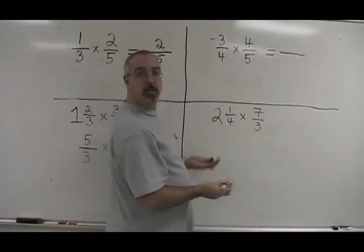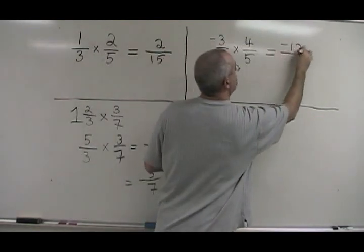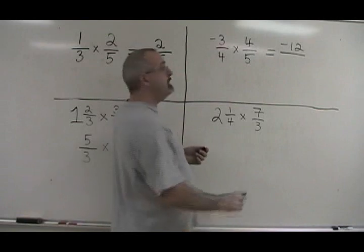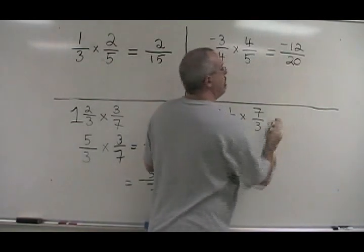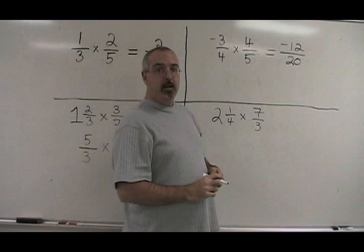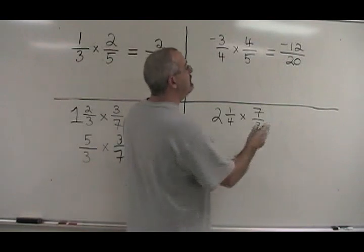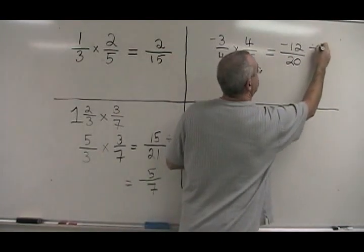Negative 3 times 4 is negative 12. 4 times 5 is 20. We have negative 12 over 20. But 12 and 20 have a common factor of 4, so we will divide both of them by 4.